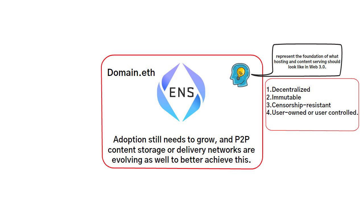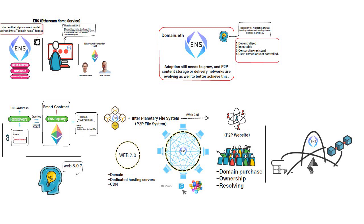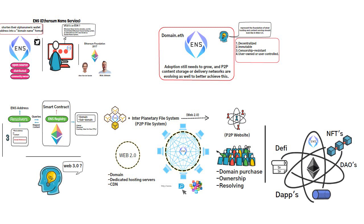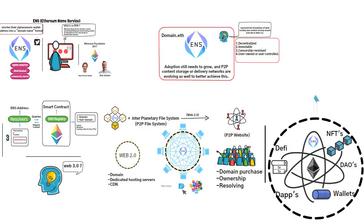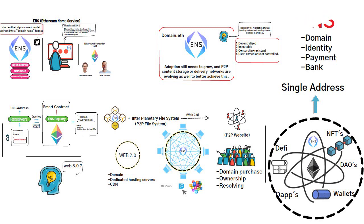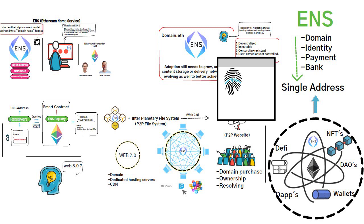ENS resides in the Ethereum ecosystem, which itself is a big technology. Rather than being an alternate blockchain or network, it exists in an ecosystem where it can easily interact with most decentralized use cases. It pairs up well with DApps, DeFi, NFTs, DAOs, and wallets, and can integrate all of those use cases under a single address. With DNS, your domain, identity, payments, and bank are all separate things; however, with ENS you can unite all these things in a single address that becomes not only your site, but also your identity and a bank.